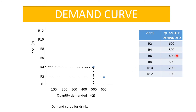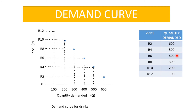We continue plotting in this way until we plot the last point, which is at a price of 12 rand where 100 drinks were demanded. When we have finished plotting all the points, we simply draw a line that connects all the dots and label it 'DD.' This is how we draw the demand curve.